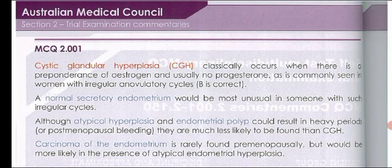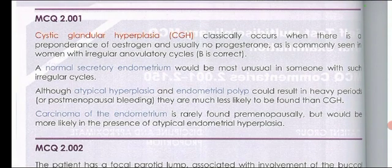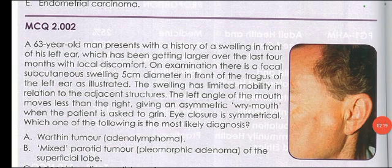The second question: a 63-year-old man presents with a history of swelling in front of his left ear, which has been getting larger over the last four months with local discomfort. On examination, there is a focal subcutaneous swelling five centimeters in diameter in front of the tragus of the left ear. The swelling has limited mobility in relation to adjacent structures. The left angle of the mouth moves less than the right, giving an asymmetric mouth when the patient is asked to grin.